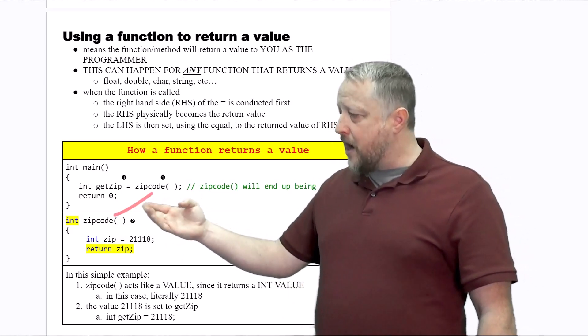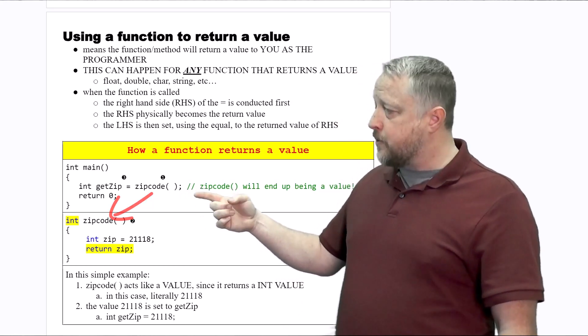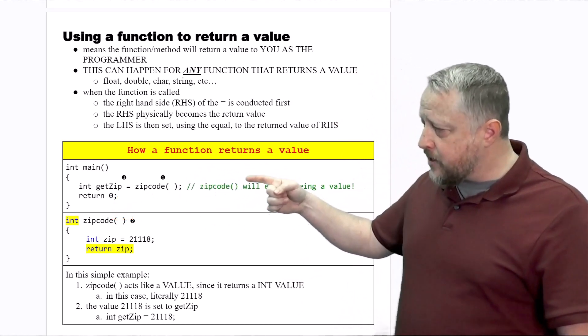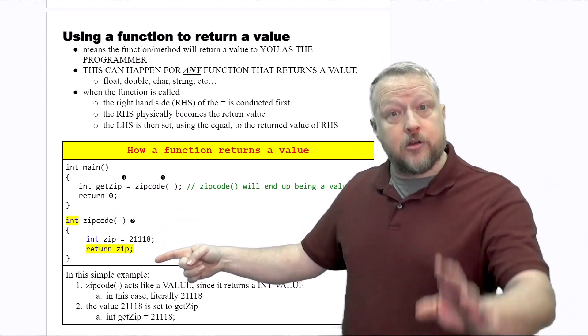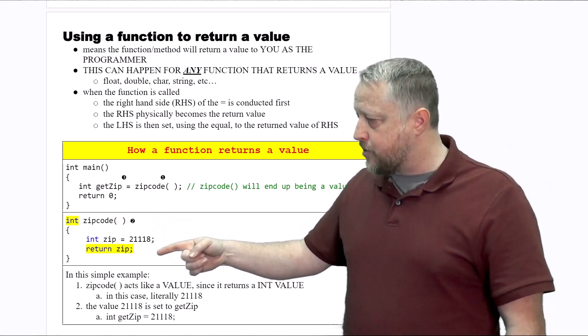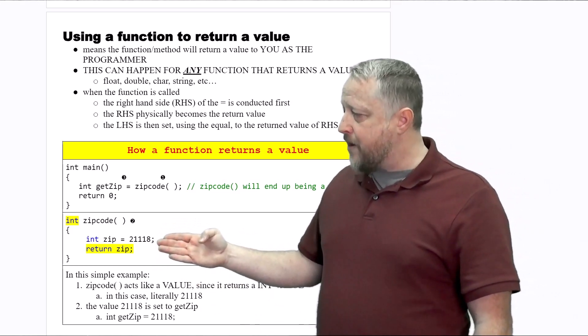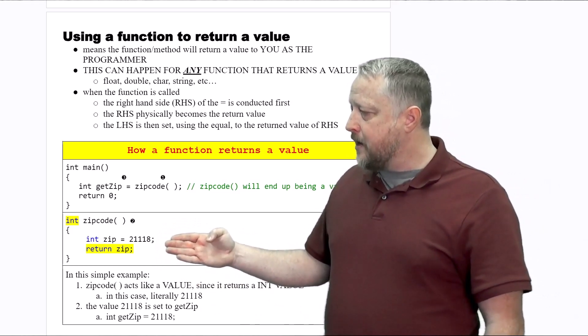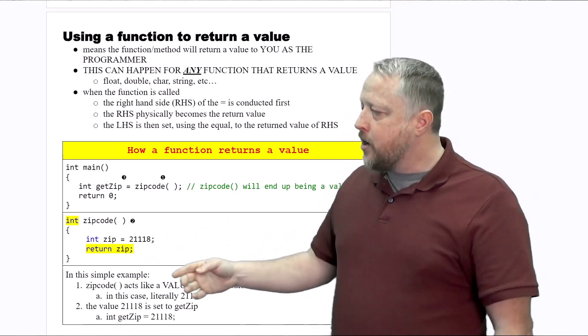We know it's a function because of the parentheses, so we're physically going to go to the zipcode function and complete it from top to bottom. In this function we have int zip equals 21118, and then we return zip.